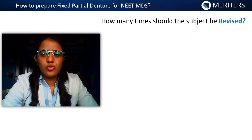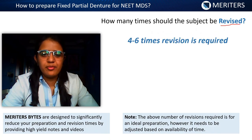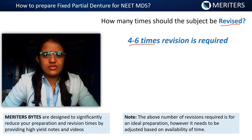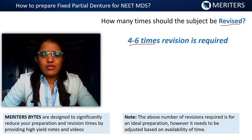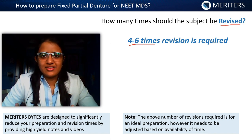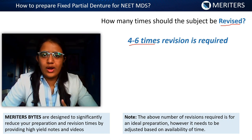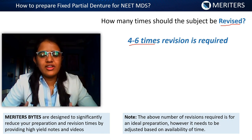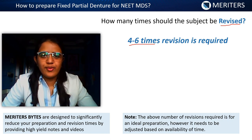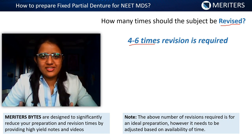You can revise FPD around four to six times in your entire course. For example, after completing FPD in one week, spend the next two weeks on another subject, then return for your second revision, which should take less time — around five days. Consecutively, whenever you have a mock exam or grand test, keep revising FPD. The more you revise, the better.